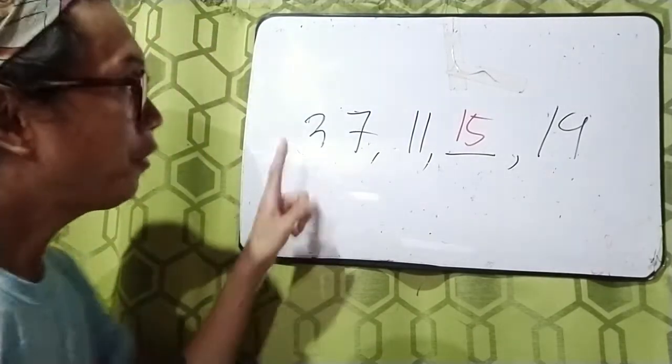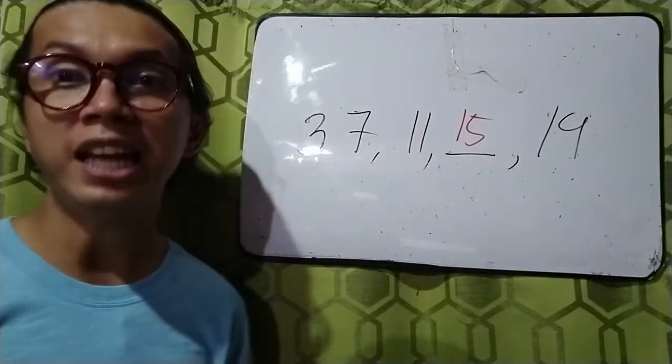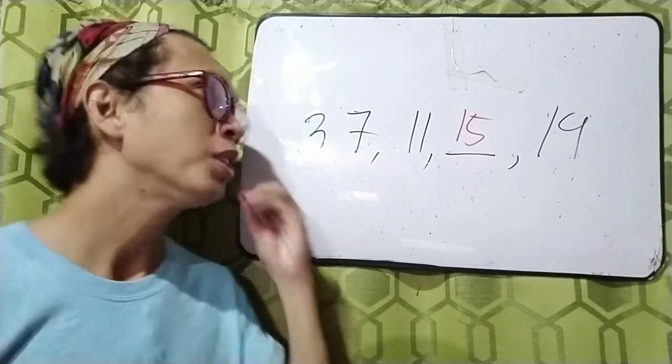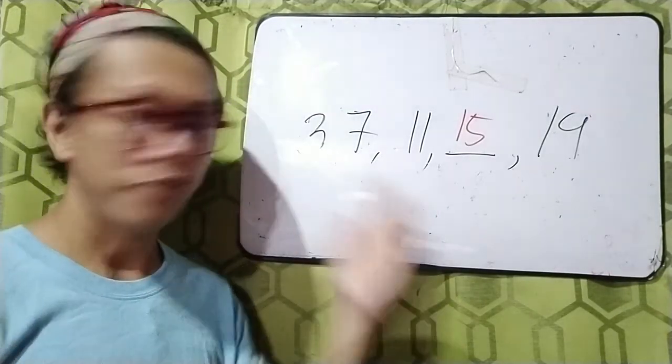So we have here an example: 3, 7, 11, 15, and 19. Do you have any idea on what to call this?